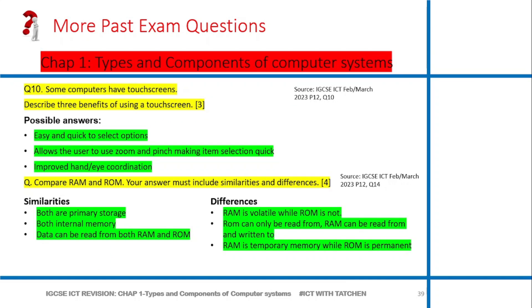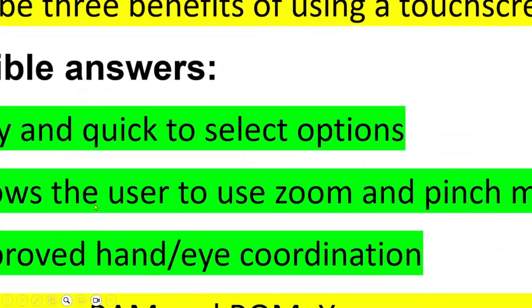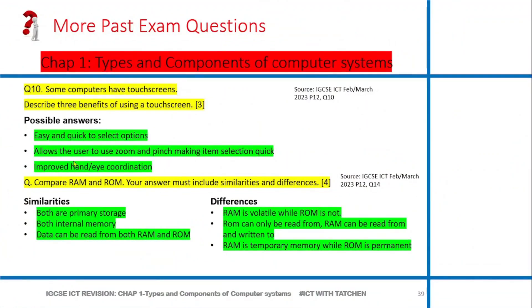This one is from May/June 2023, the same paper. Some computers have touch screens. Give two benefits of using a touch screen. Possible answers: easy and quick to select options, allows the user to use zoom and pinch making items larger or smaller. You can zoom, look at what I'm doing now - you can zoom, you can pinch on something. Those are possibilities that a touch screen allows you to have. It can also improve hand-eye coordination, so with the touch screen you can move things around and that way your eyes move accordingly.